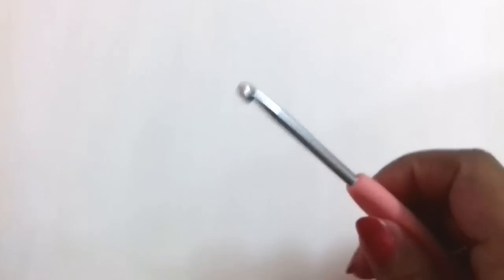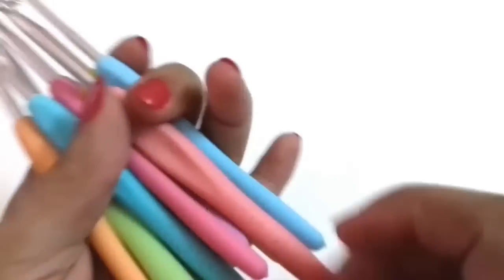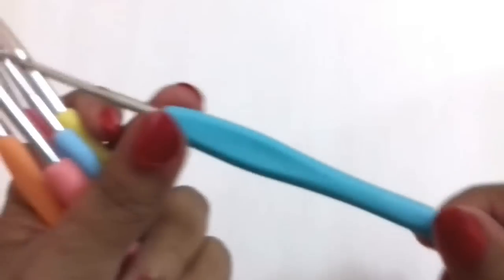On each crochet hook handle the sizes are written, and the smallest size is this.